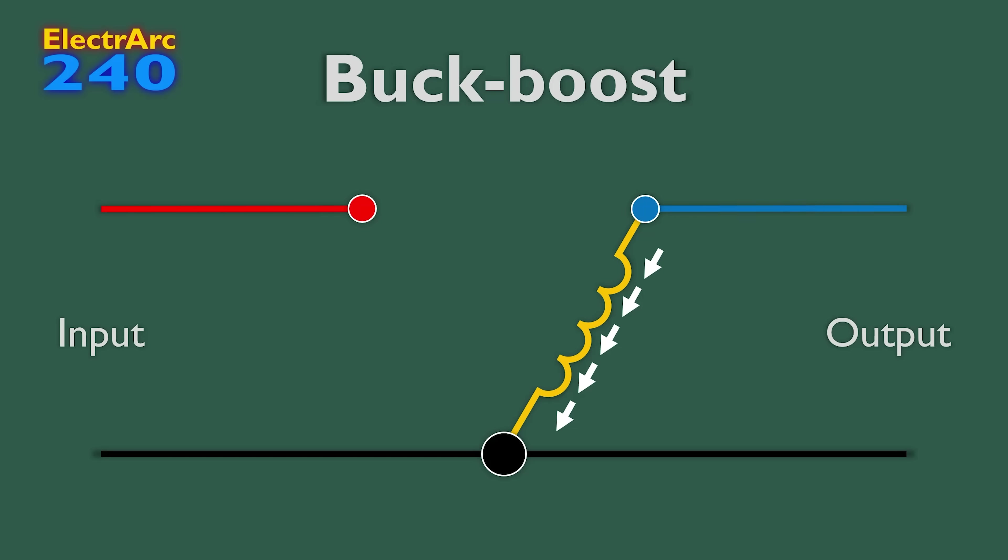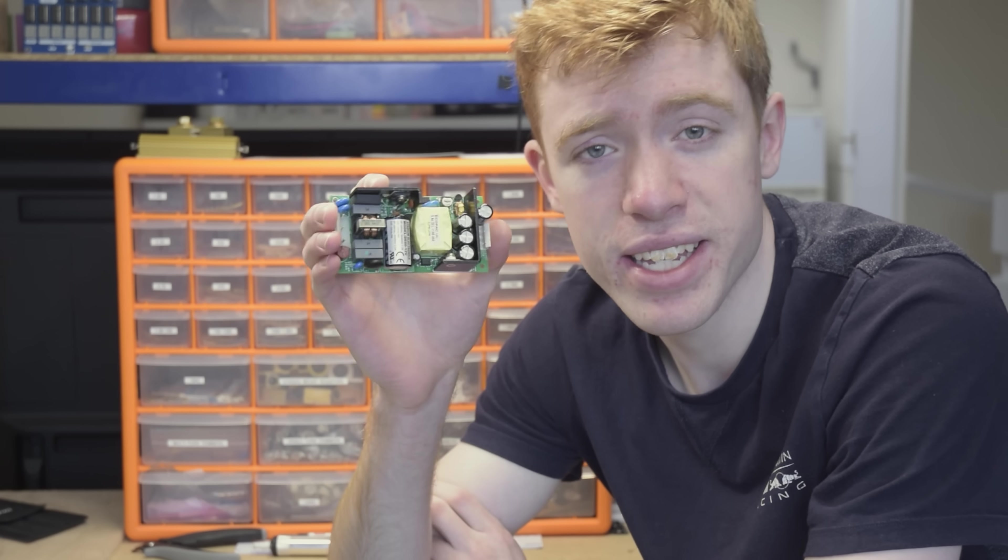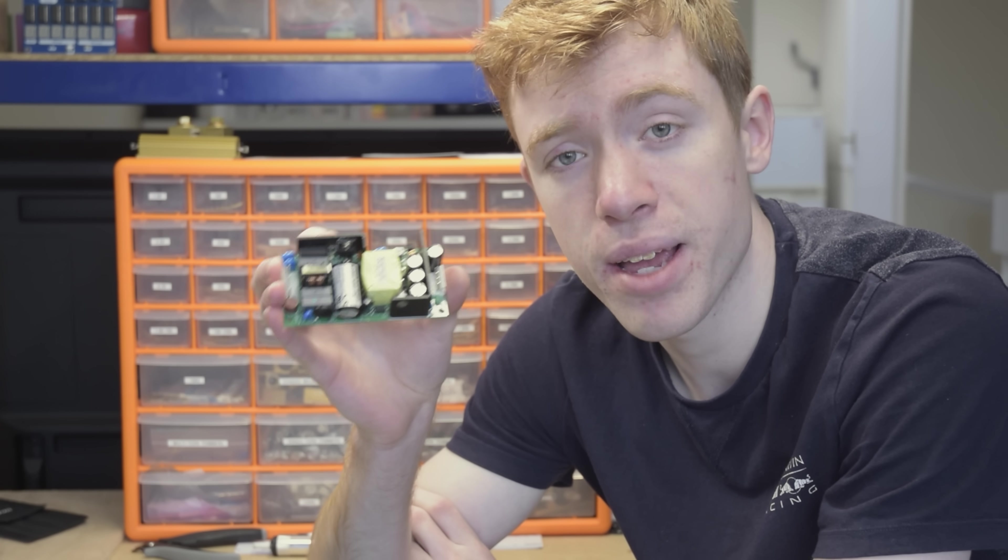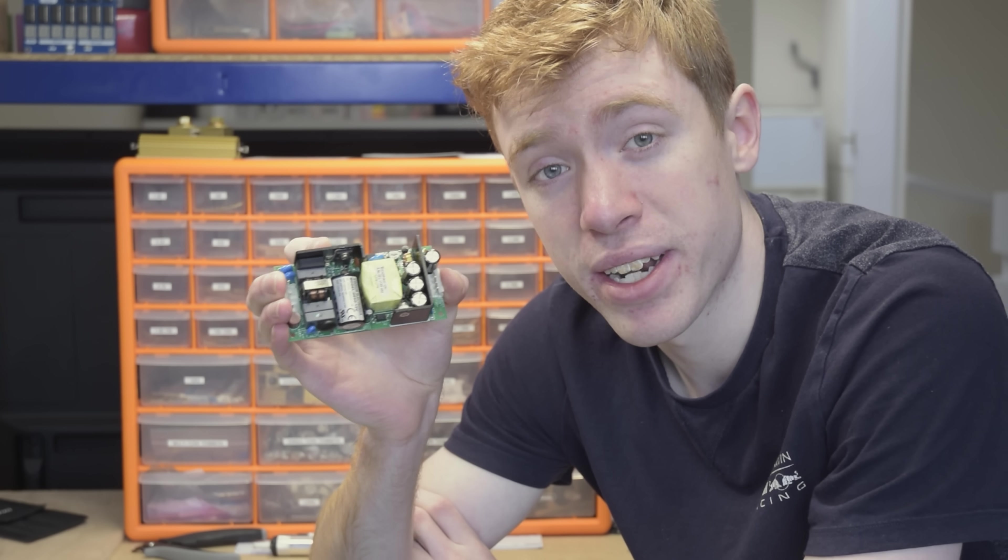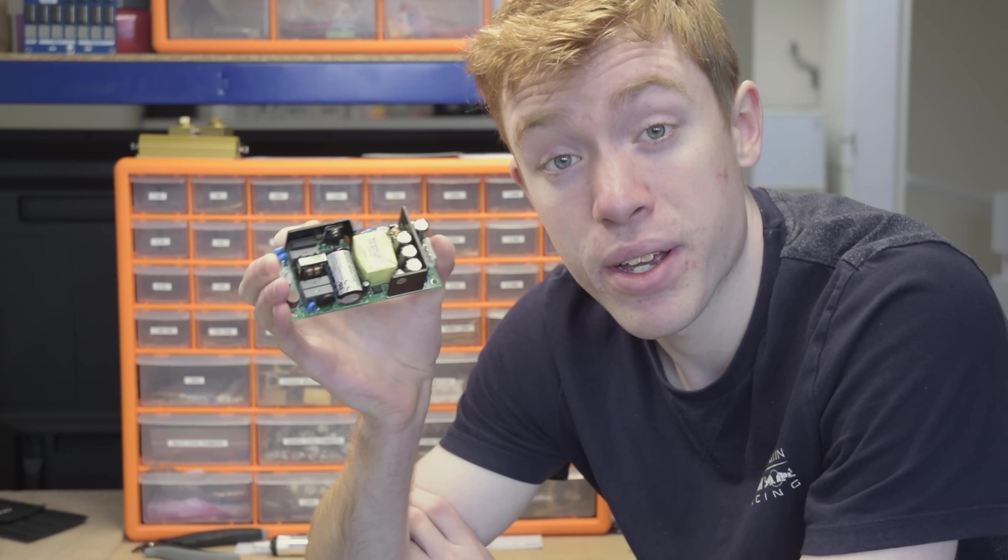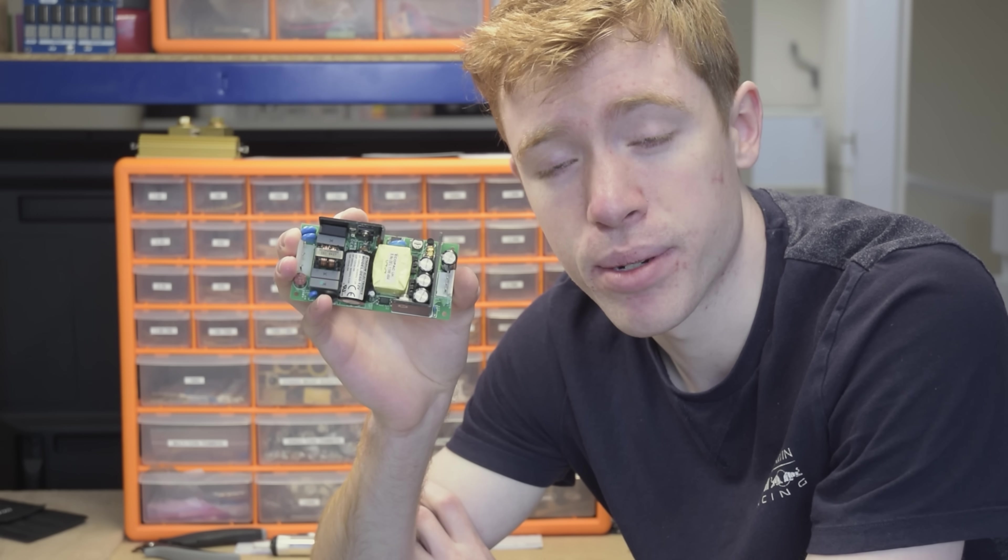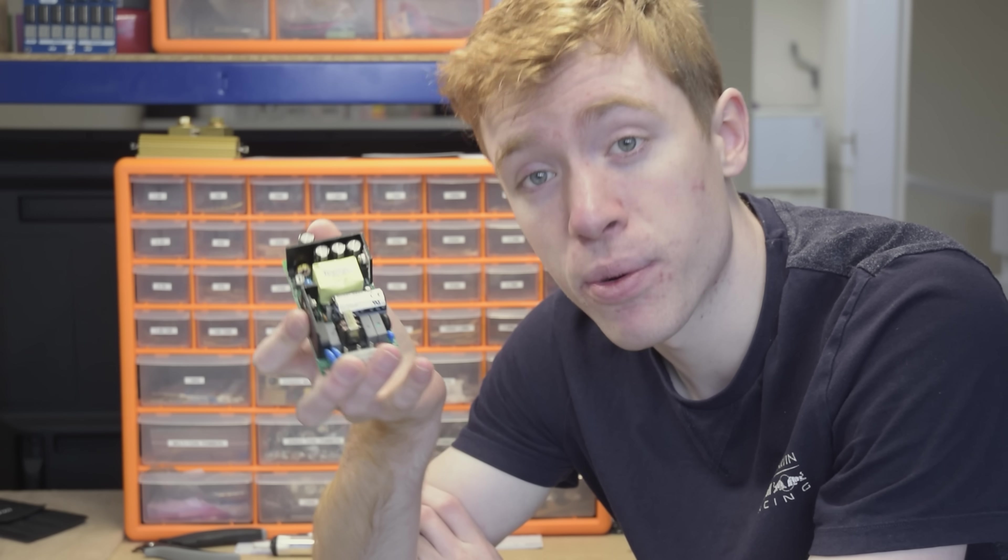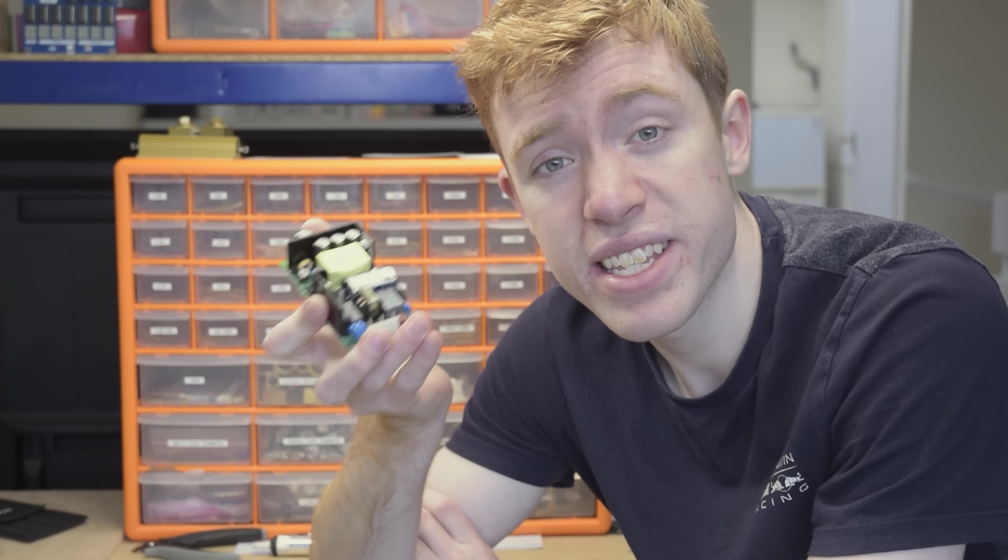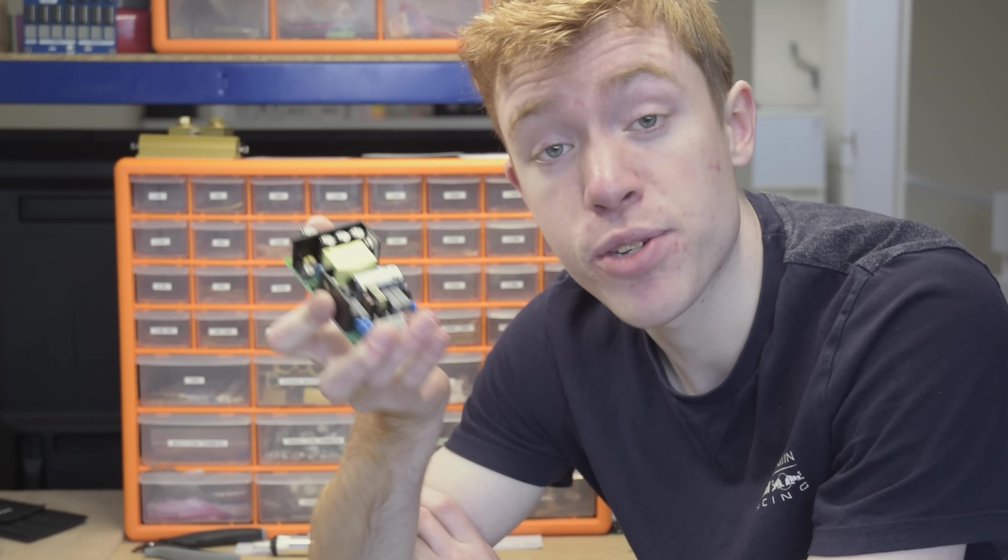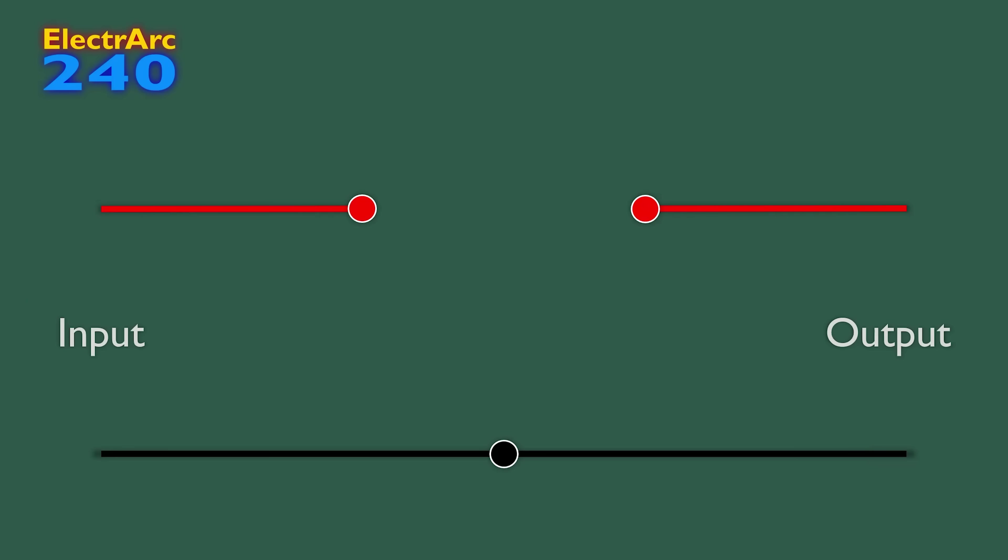This really limits applications for the standard buck-boost converter, as most systems want all voltage rails to be positive with respect to a common negative, which is not the case here. While outside the scope of this video, I'd like to quickly mention that the isolated buck-boost converter, known as the flyback, is almost certainly the most commonly used isolated topology, because they're extremely simple and, once isolated, don't suffer from the inverted output problem, because you can simply flip the windings around. I've gone into more detail on flyback converters in my Switch Mode Power Supply video, linked above.